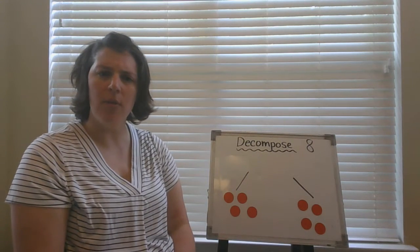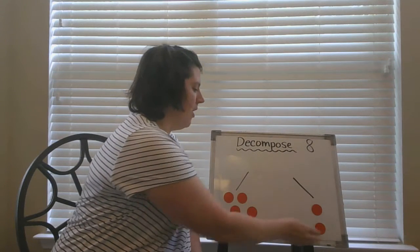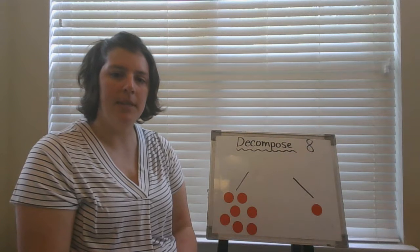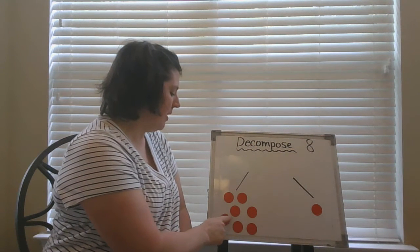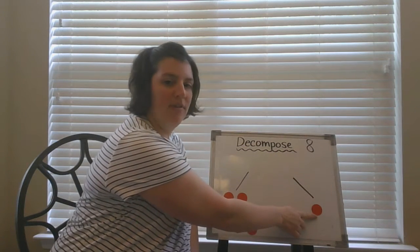I wonder if there's another way I can do it. Let's see. What if I move all these counters over here? How many are in my groups now? Eight is a group of one, two, three, four, five, six, seven, and a group of one.